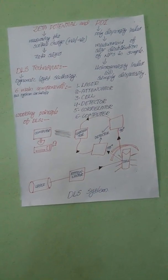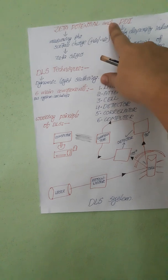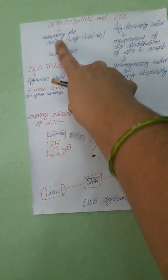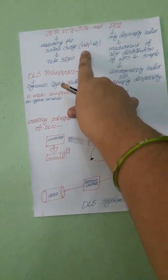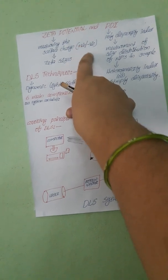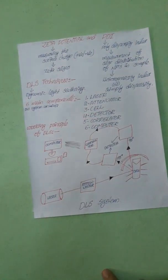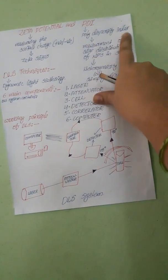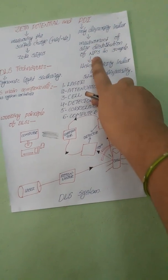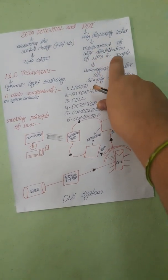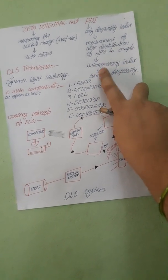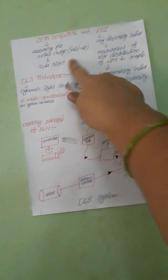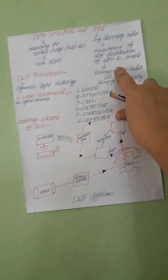Hello students, today I am going to discuss zeta potential and PDI — PDI means polydispersity index. Zeta potential means it is measuring the surface charge of the nanoparticle, either positive or negative charge. We are measuring the zeta potential using the equipment called zeta sizer. Polydispersity index means it is a measurement of the size distribution of nanoparticles in a sample. Polydispersity is also called the heterogenicity index or simply dispersity.